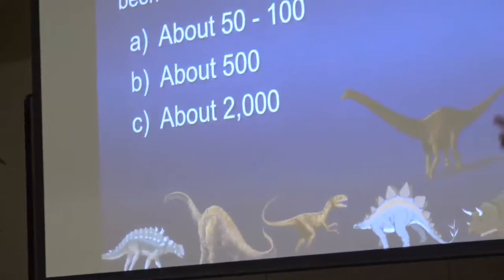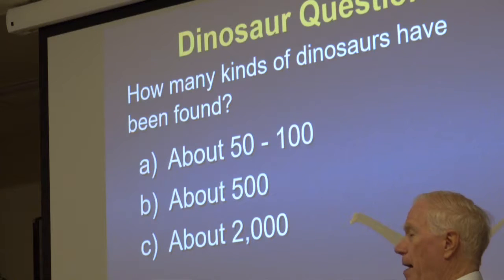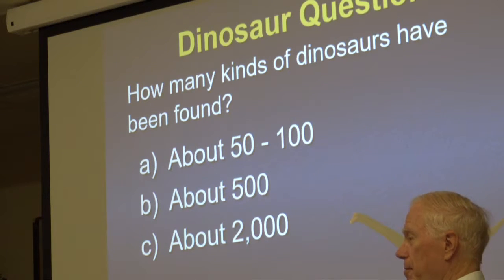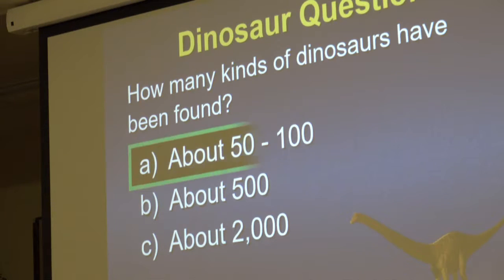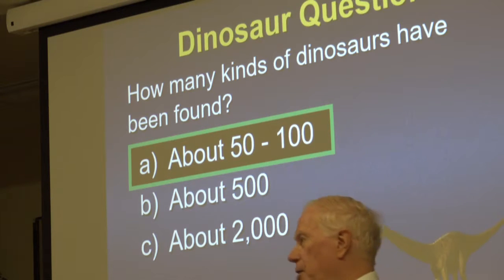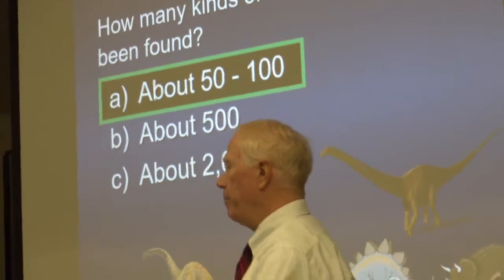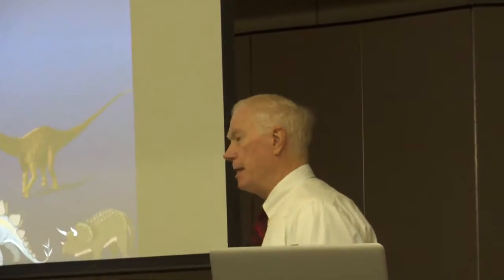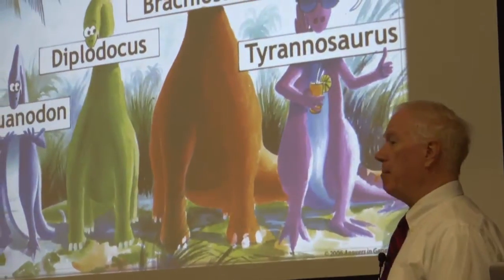How many different kinds of dinosaurs have we found? About 50 to 100. We've known that as creationists for quite a while, and the evolutionists are now starting to come around to that because they've made many mistakes. Just because we give something a different name does not mean it's a different kind. We've given all these dinosaurs different names, but that doesn't mean they're different kinds. We all have different names but we're the same kind — like dogs: short dogs, big dogs, fluffy dogs — but they're all dogs.